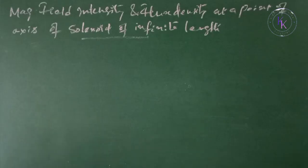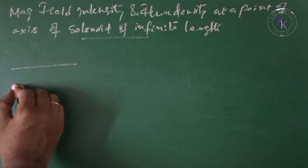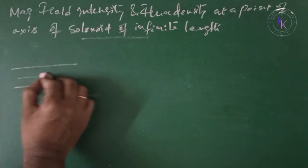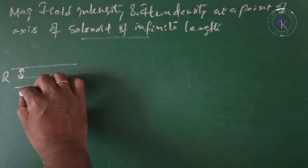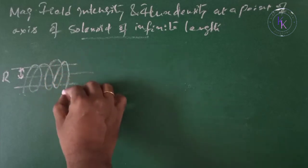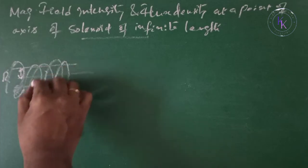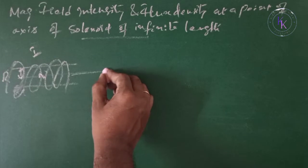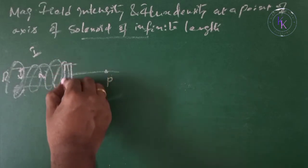Magnetic field intensity and flux density at a point on the axis of a solenoid of infinite length. Let us consider a solenoid of infinite length having a radius of R, the current flowing through it, let it be I, and consider a point P on the axis at a distance x from a differential element dx.